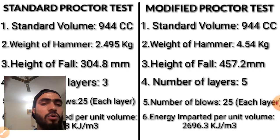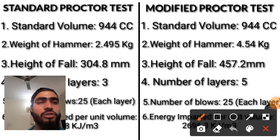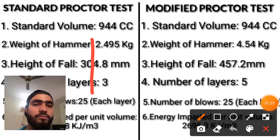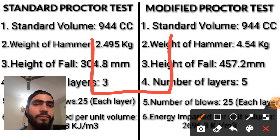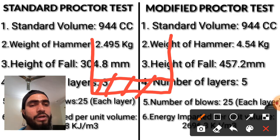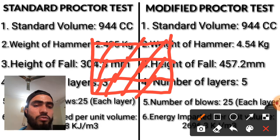Now let us understand how we perform these two tests. In standard proctor test, we fill the soil in the mold in three layers. The first layer is filled and compacted with 25 blows, then the second layer is filled and compacted with 25 blows, and the third layer is filled and compacted with 25 blows. So the total number of blows in standard proctor test are 75 — 25 on each layer.